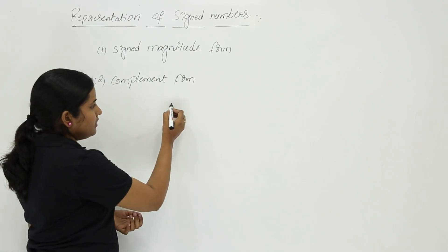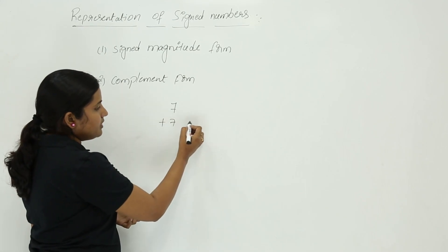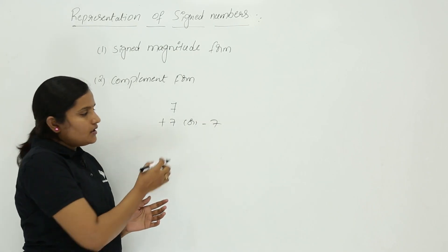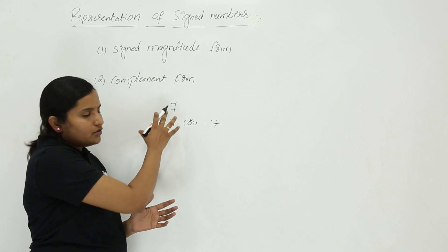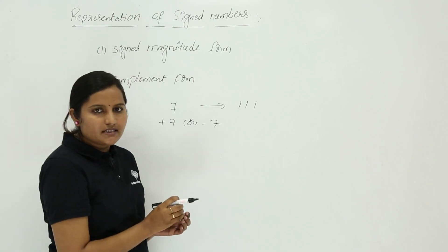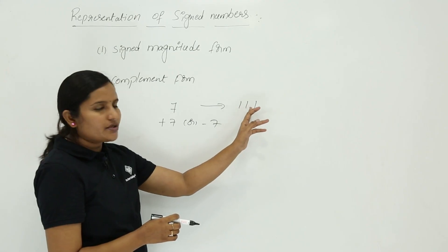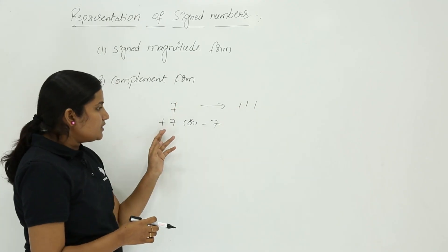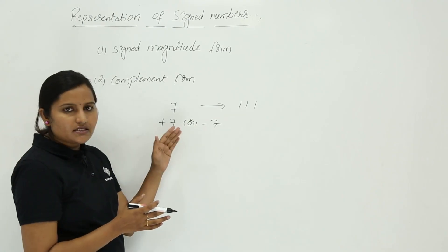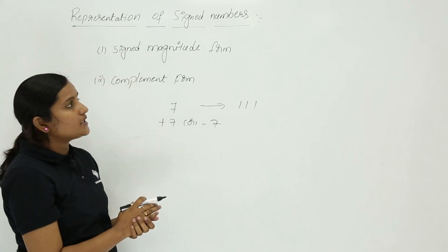For example, representing 7 is different from representing plus 7 or minus 7. From previous classes we know how to represent normal 7 — in binary, a minimum of 3 bits are required to represent 7, so we take triple 1. To resolve the confusion of how to represent plus 7 or minus 7, we have this topic: representation of signed numbers.